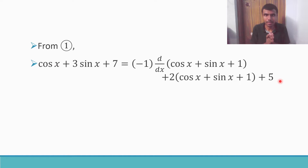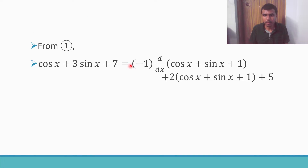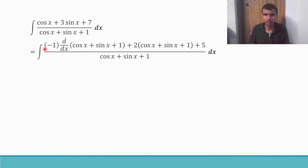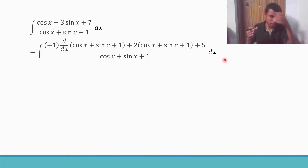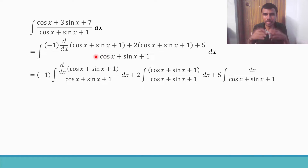So cos x + 3 sin x + 7 has become: minus 1 into the derivative of (cos x + sin x + 1), plus 2 into (cos x + sin x + 1), plus 5. Now let us start our actual integration — I am going to integrate separately, giving the denominator to each term.